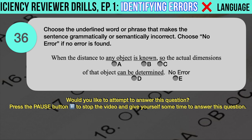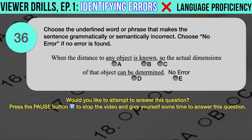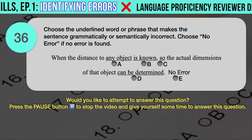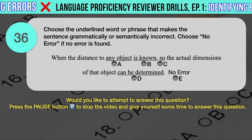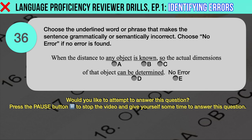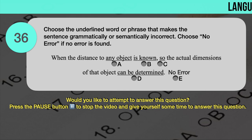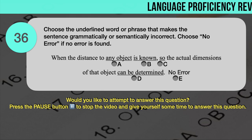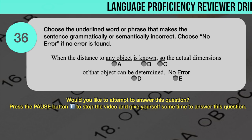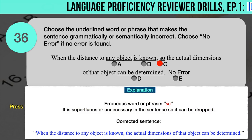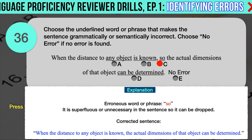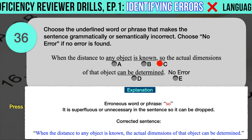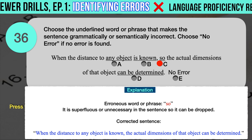Drill question number 36. 'When the distance to any object is known, so the actual dimensions of that object can be determined.' The underlined words are: A. Any object, B. Is known, C. So, D. Can be determined. The correct answer is C. 'So' is superfluous and unnecessary in the sentence, so it can be dropped. Correct sentence: When the distance to any object is known, the actual dimensions of that object can be determined.